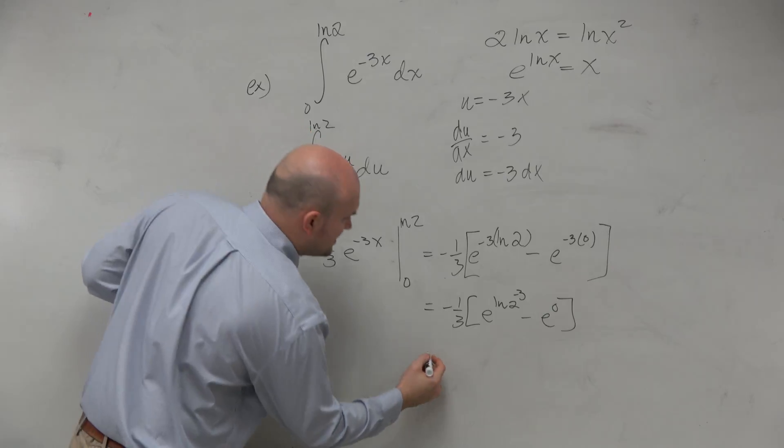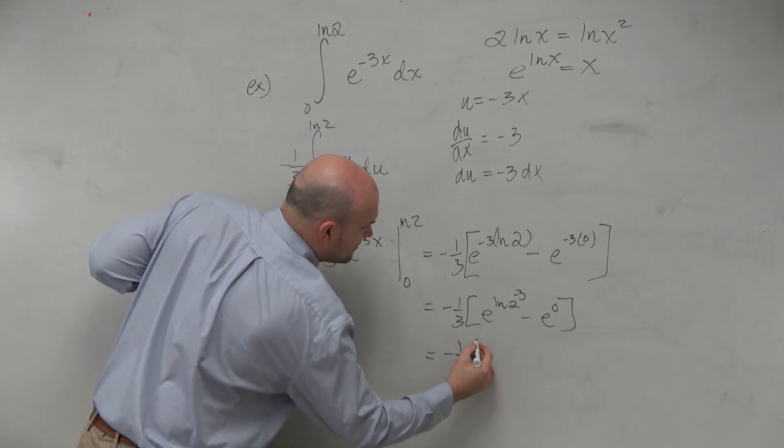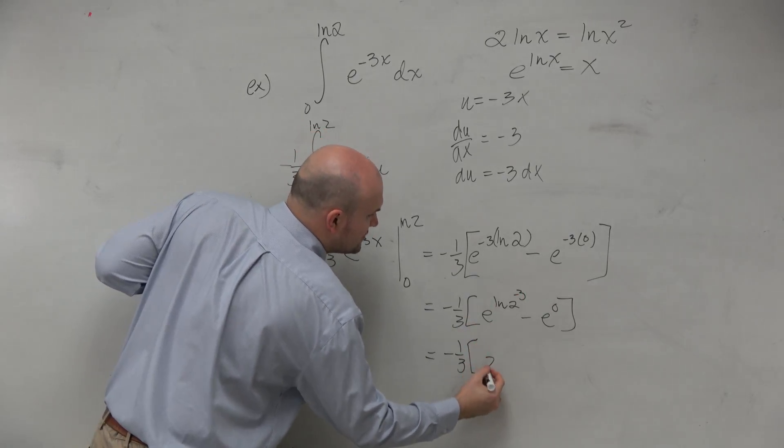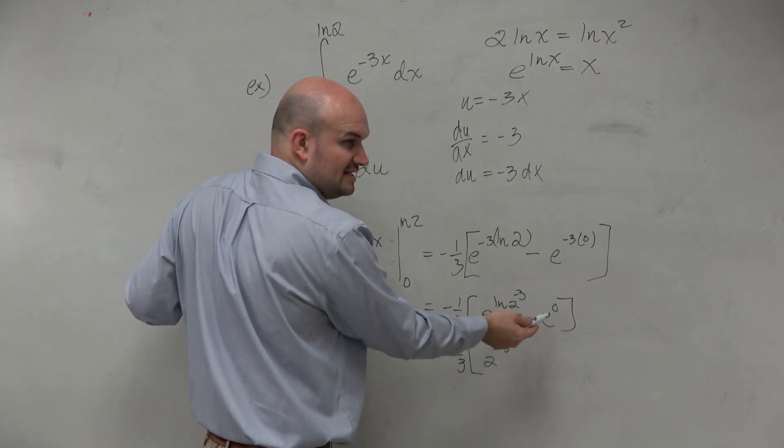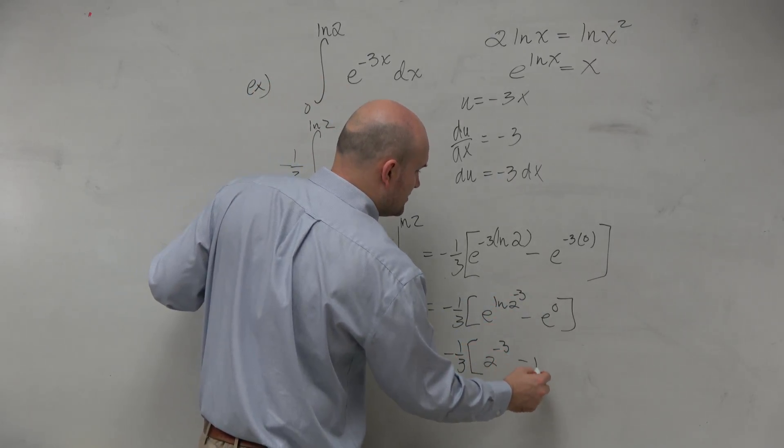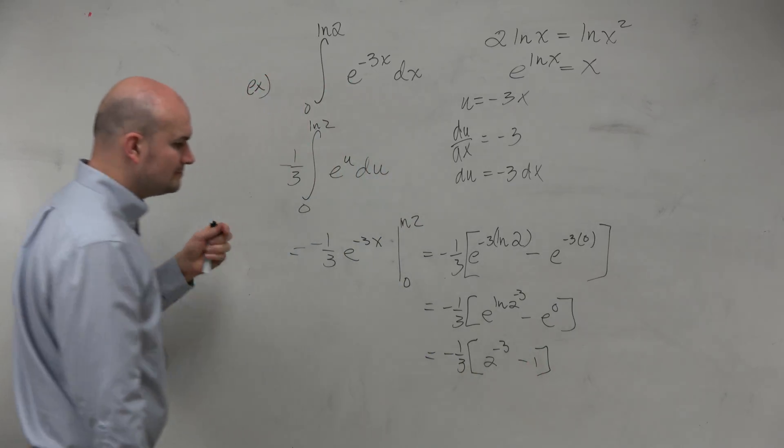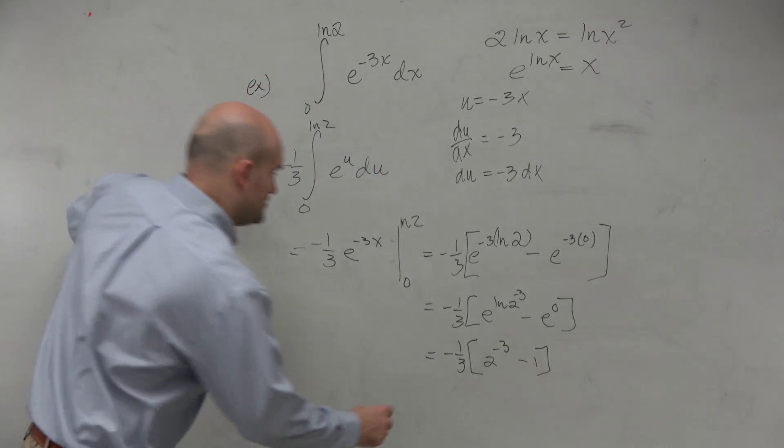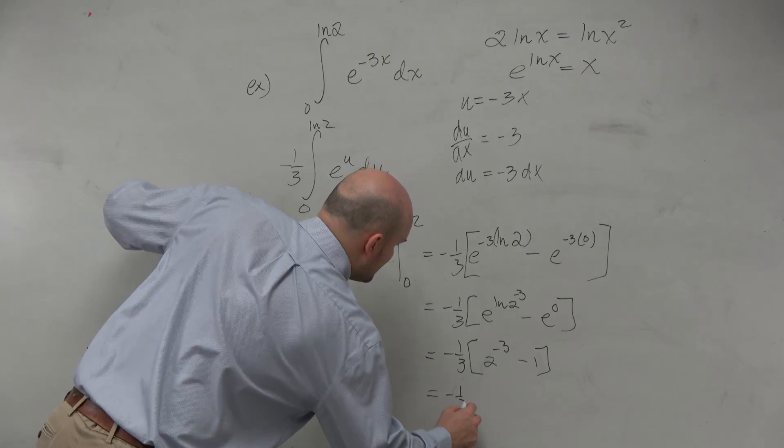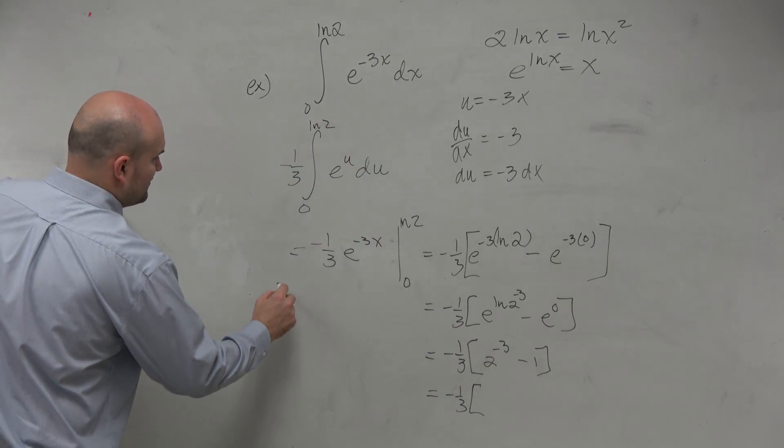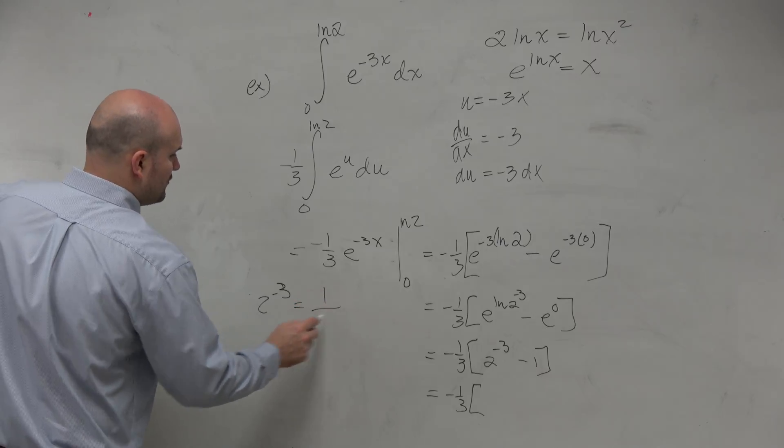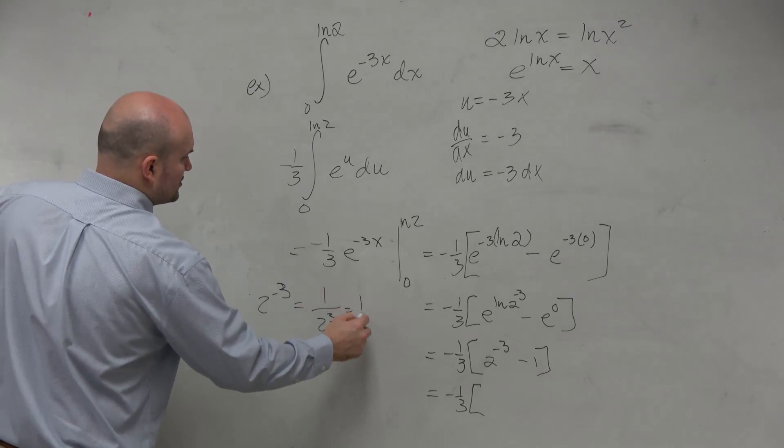So therefore, this gives me negative 1/3. You have 2 to the negative 3rd. And then minus e to the 0 is minus 1. So simplify this one more time. I get negative 1/3. 2 to the negative 3rd is equal to 1 over 2 cubed, which equals 1 over 8.